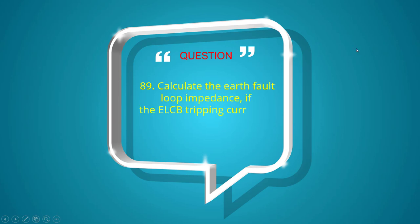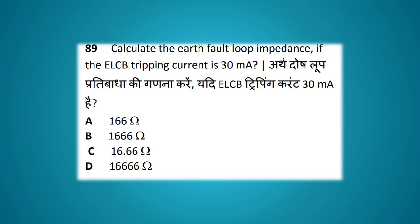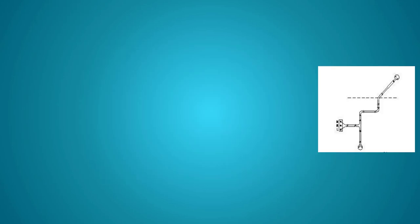Calculate the earth fault loop impedance if the ELCB tripping current is 30 milliampere. Options: 166 ohm, 13.6 ohm, 16.66 ohm, 14.6 ohm. The answer is 16.66 ohm.